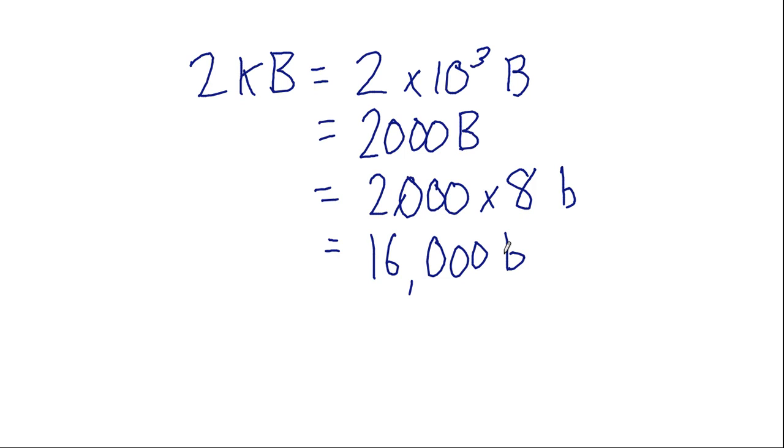But of course, if we use the other notation for the prefix k, where k was 2 to the power of 10, it would be slightly different, and you can check the answer, it would be equal to 16,384 bits.